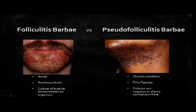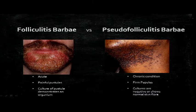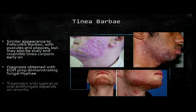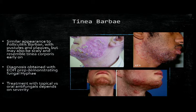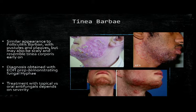Folliculitis barbae versus pseudofolliculitis barbae: folliculitis barbae is acute, painful, and if you culture a pustule it will actually grow something. Pseudofolliculitis barbae is chronic with firm papules, and cultures are often negative or just normal skin flora. It's important to note that pseudofolliculitis tends to occur in African-American men more often. Tinea barbae has a similar appearance to folliculitis barbae, so again history is really important. It usually occurs in adult men having close contact with animals, and Trichophyton is the usual causative organism. A KOH prep can also help with diagnosis.